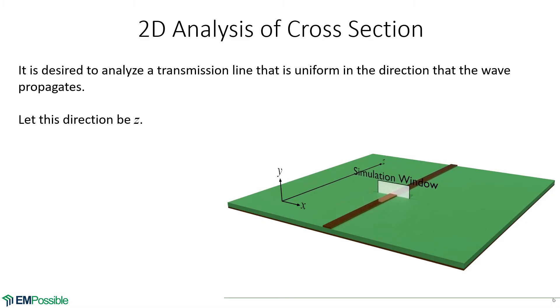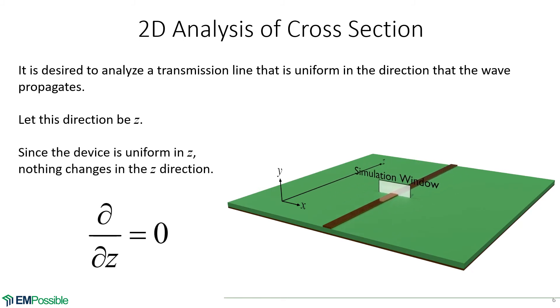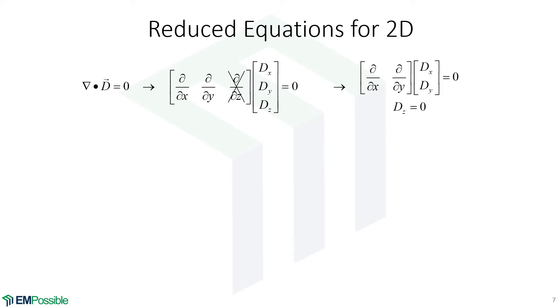Notice that this transmission line in the Z direction, nothing is changing. In the X direction, we have our line that stops and starts. In the Y direction, we have the line and substrate to ground plane. Things are changing in the X and Y direction, but in this Z direction, absolutely nothing changes. If nothing is changing in the Z direction, it makes sense that we could set our Z derivative equal to zero. And that helps us simplify the math.